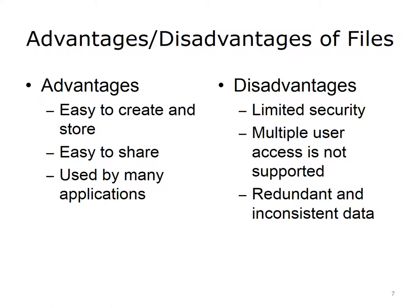Files are stored within file systems specific to each operating system. Files can be easily created and shared via email and shared drives, and accessed by different applications. For example, genomic data is often stored in large data files that are searched and parsed by different programs. On the other hand, files have limitations: the security of files is limited to that of the file system; by default, multiple users cannot use the same file at the same time — only one user can open the file for editing, and additional users open a read-only copy. Finally, using files to store structured data with relationships can result in redundancy and inconsistency.